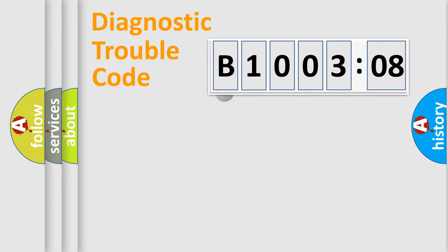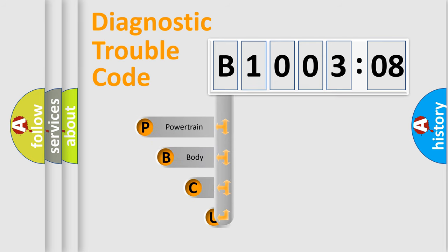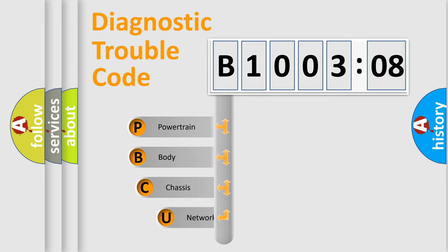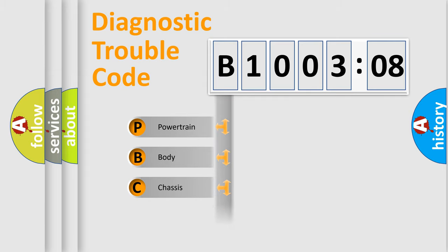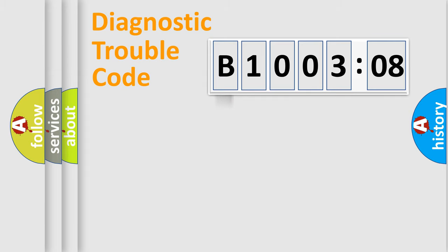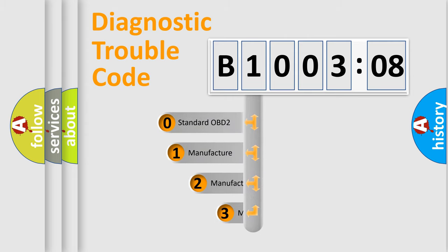First, let's look at the history of diagnostic fault code composition according to the OBD2 protocol, which is unified for all automakers since 2000. We divide the electric system of an automobile into four basic units: Powertrain, Body, Chassis, and Network. This distribution is defined in the first character of the code.